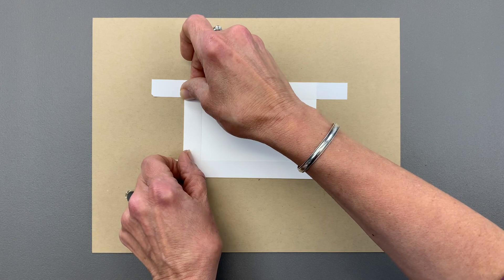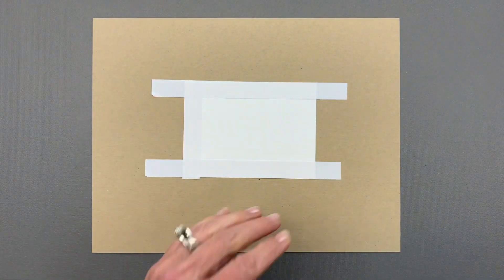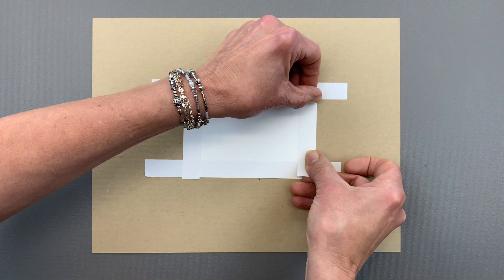Now I'm going to use two different colors for ink blending. I think this is the hardest part of the card is getting these strips down, and these strips can be reused.